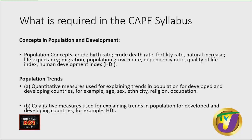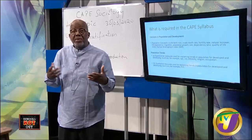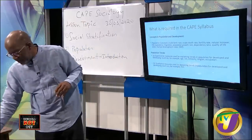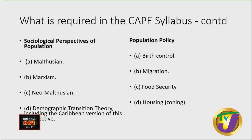You must know how to define and calculate crude birth rate, crude death rate, fertility rate, and natural increase — especially for your MCQ, where you have to do this quickly. We will also look at the sociological perspectives on population: the Malthusian, the Marxist, the neo-Malthusian, and the demographic transition. With respect to population policy, we'll look at birth control, migration, food security, and housing — social issues that are very important with respect to population.